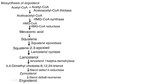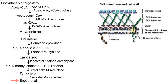Ergosterol is the most abundant sterol in fungal cell membranes. It regulates permeability and fluidity, and because of its crucial function and unique structural properties, ergosterol is the target of the majority of available antifungals. Without ergosterol, the cell membrane becomes leaky, intracellular contents escape, and cell death occurs.